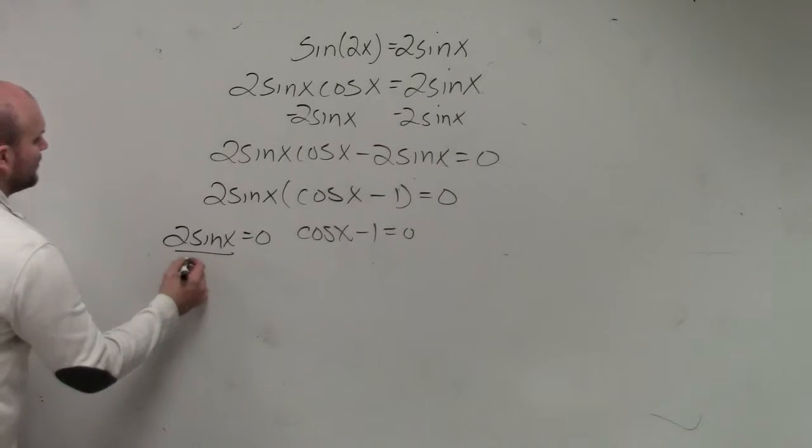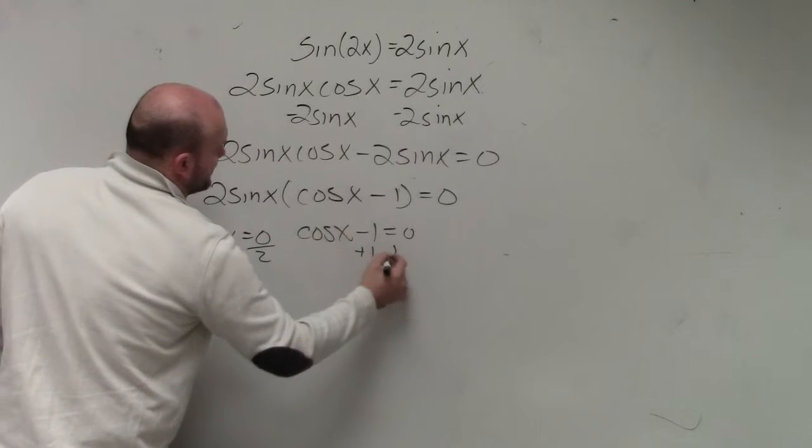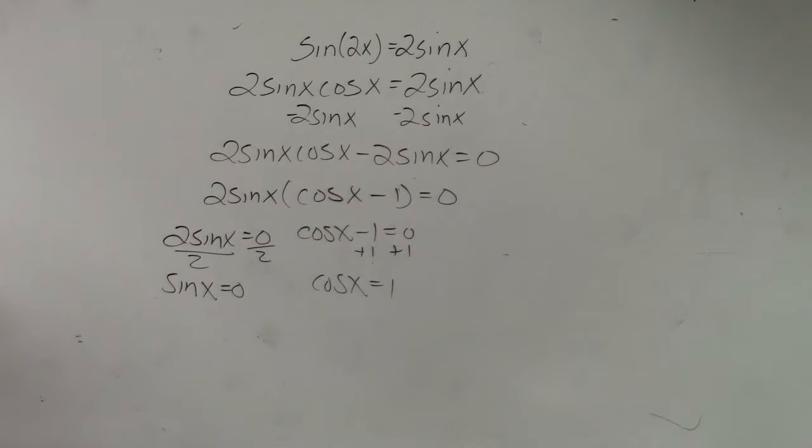So to solve for sin(x), I get sin(x) = 0. And then over here, I get cos(x) = 1. So basically, what they're asking is between the values of 0 and 2π, when is sin(x) equal to 0 and cos(x) equal to 1?